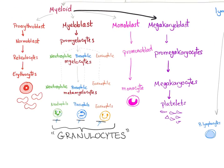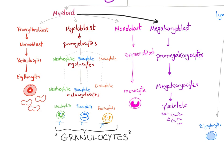Now, the monoblast will change into promonocyte, then into the monocyte. There are no granules here, so monocytes are agranulocytes, or non-granular cells.